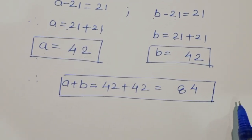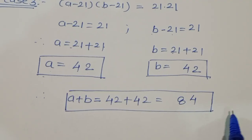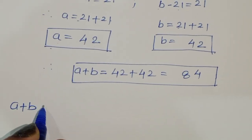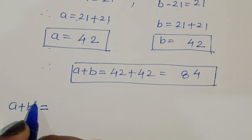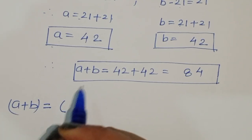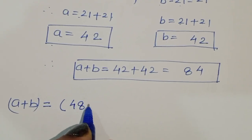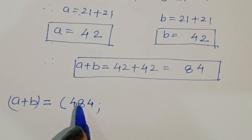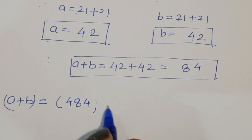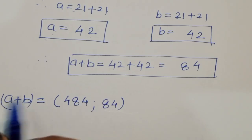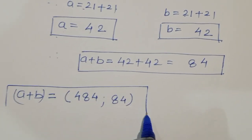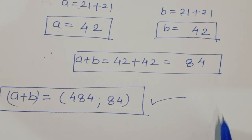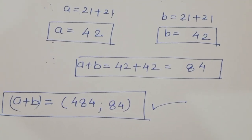So in this way we got three values of a plus b: from Case 1, a plus b equals 484; from Case 2 also 484; and from Case 3, a plus b equals 84. This is the complete solution for this equation.